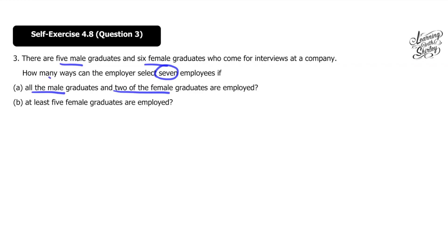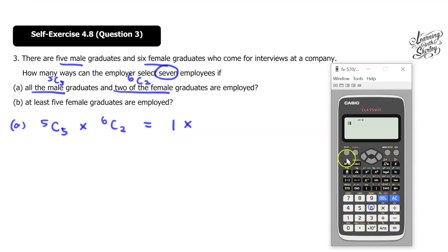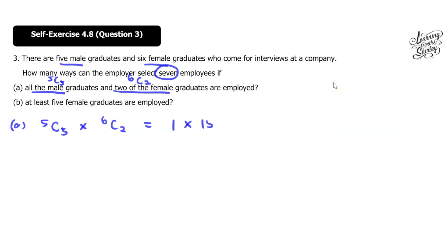So if it's all the male, it would be 5C5. If it's 2 of the female, it means it's 6C2. So the working for A would be 5C5 times with 6C2. So 5C5 is equal to 1. And then 6C2, let's calculate. So 6C2 is equal to 15. So it's 15. So equals to 15 ways.